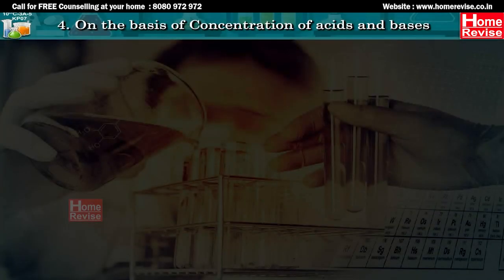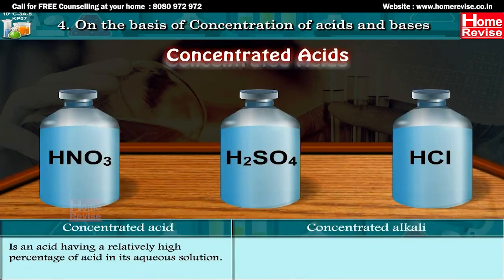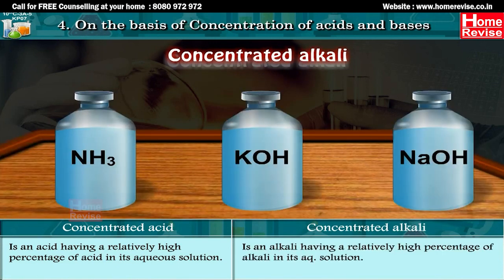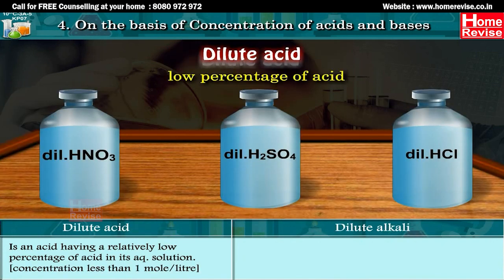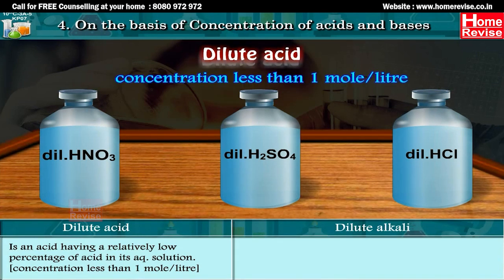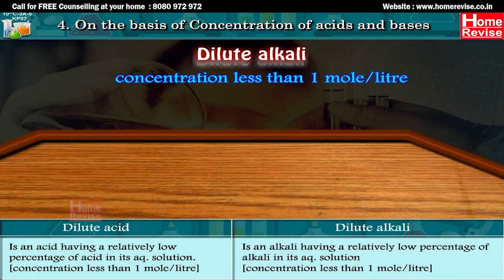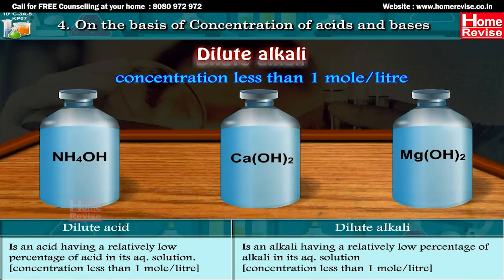A concentrated alkali is an alkali having a relatively high percentage of alkali in its aqueous solution. A dilute acid is an acid having a relatively low percentage of acid in its aqueous solution — concentration less than 1 mole per liter. A dilute alkali is an alkali having a relatively low percentage of alkali in its aqueous solution — concentration less than 1 mole per liter.